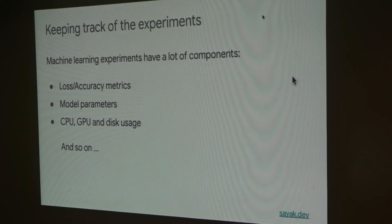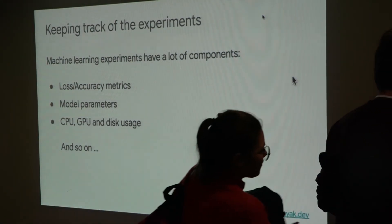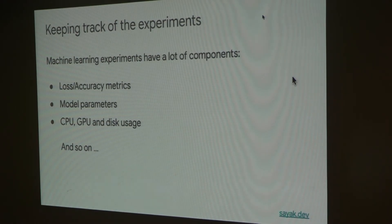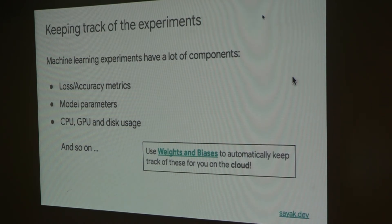Machine learning models give rise to lots of experiments, and there will be many metrics to take care of — for example, loss and accuracy from different experiments, model parameters, CPU usage, memory footprint, GPU usage, and so on, because your clients or other stakeholders may want to look at these. I highly suggest you check out this tool called Weights and Biases to automatically keep track of these things for you on a hosted environment which is absolutely shareable with anyone on your team or in the world.